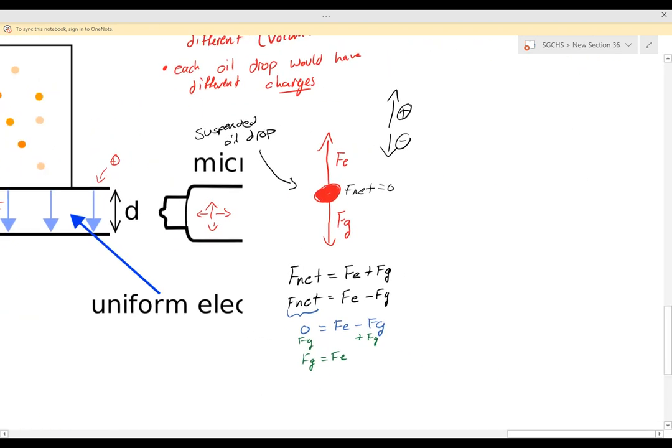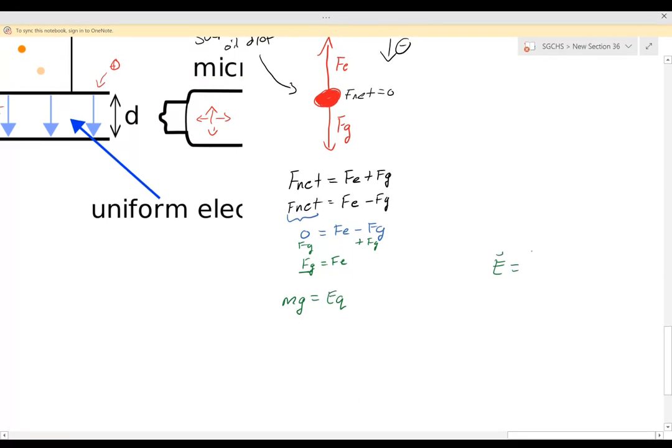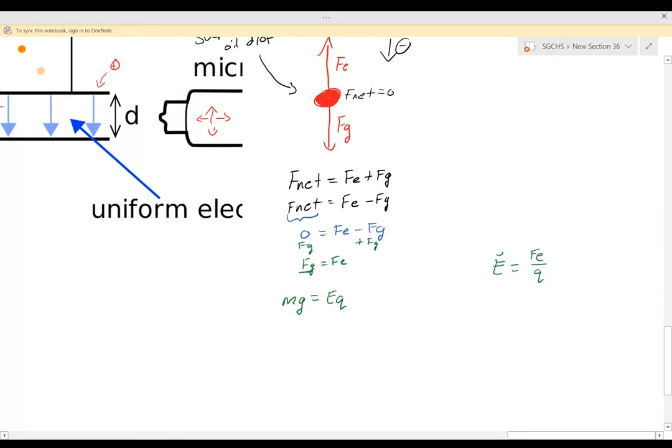Now from here, we can apply a few simple calculations. The force of gravity is mass times gravity, and the electric force is E times Q. And remember, the uniform electric field in parallel plates equals the electric force divided by the charge that's being acted on by the electric field. Now some things to really understand about these numbers that we're going to be finding and plugging in.